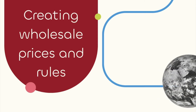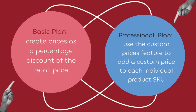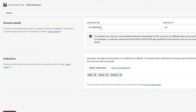Now let's talk about creating wholesale prices and rules. The app offers two ways to create new prices: you can create prices as a percentage discount of the retail price, or if you're on the Wholesale Professional plan, you can use the custom prices feature to add a custom price to each individual product SKU. For the basic percentage discount, add the customer tag, then a percentage discount, and select the collections you want to apply it to. In this example, we're giving 40% off the retail price to customers with the silver tag.